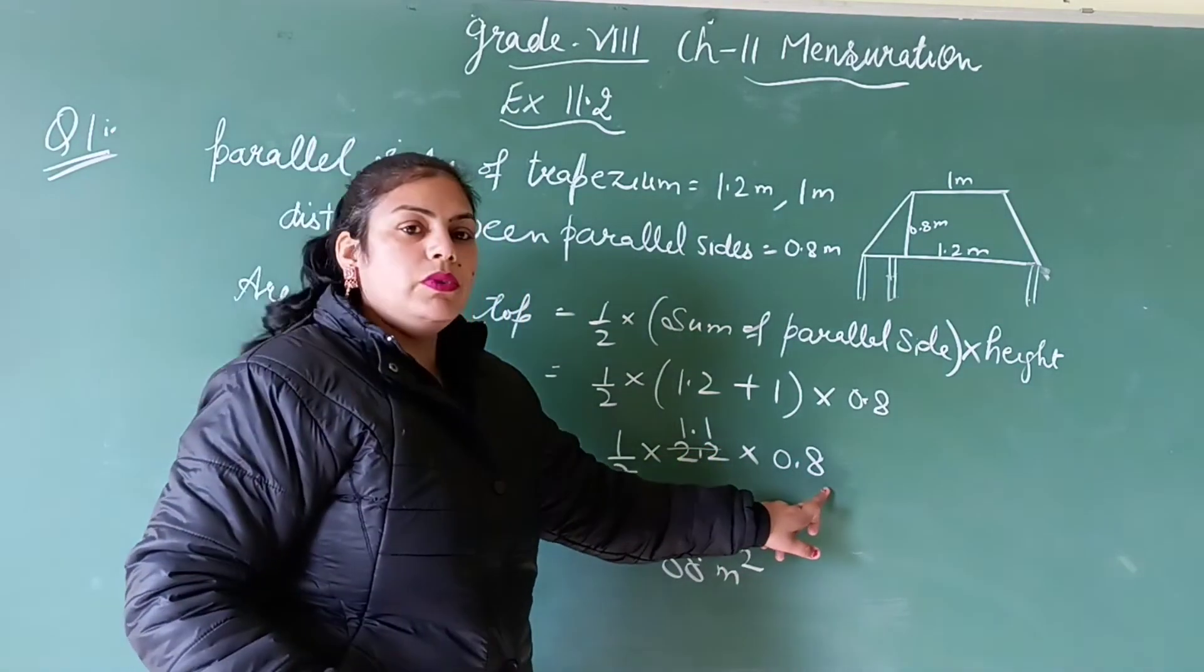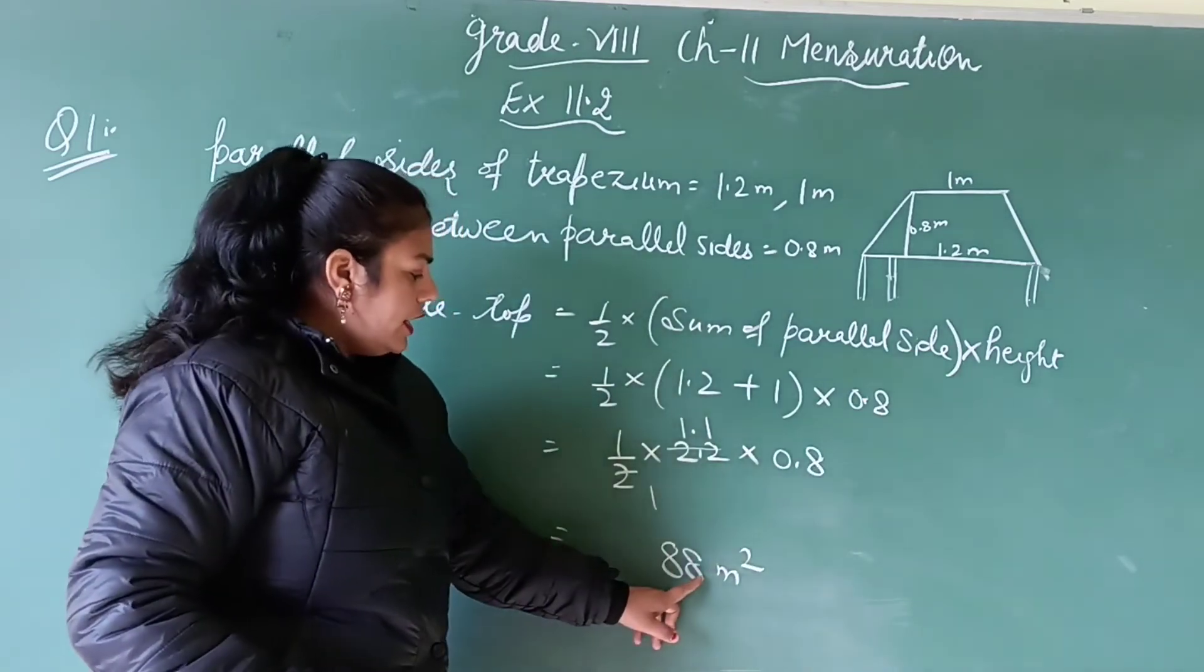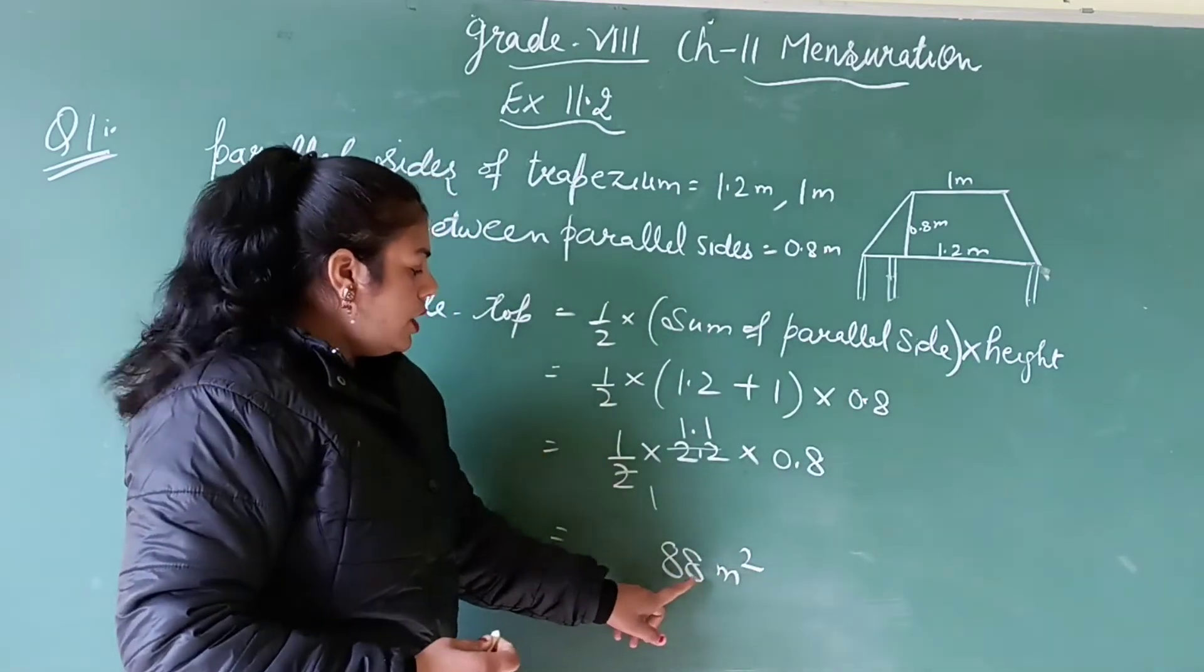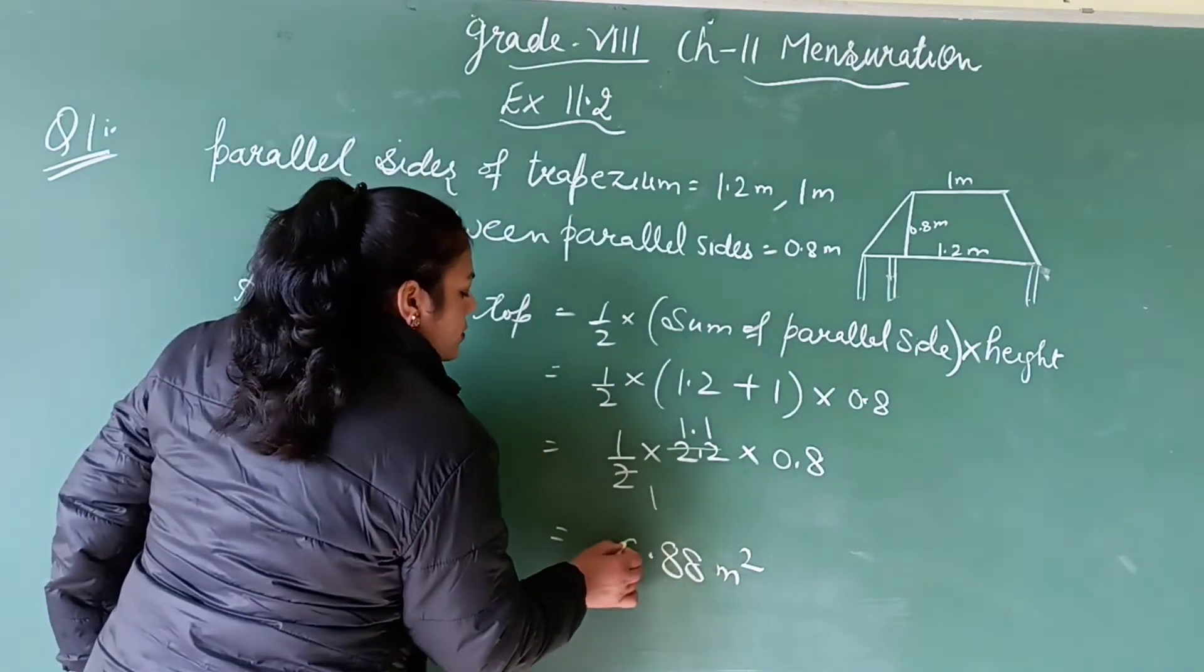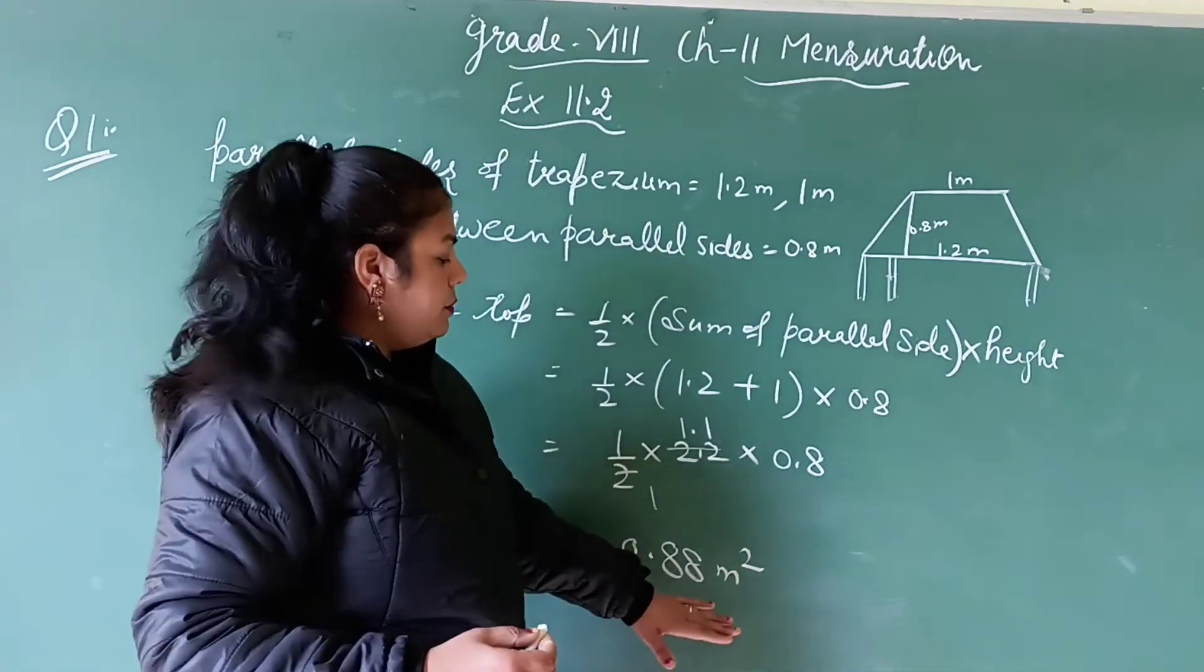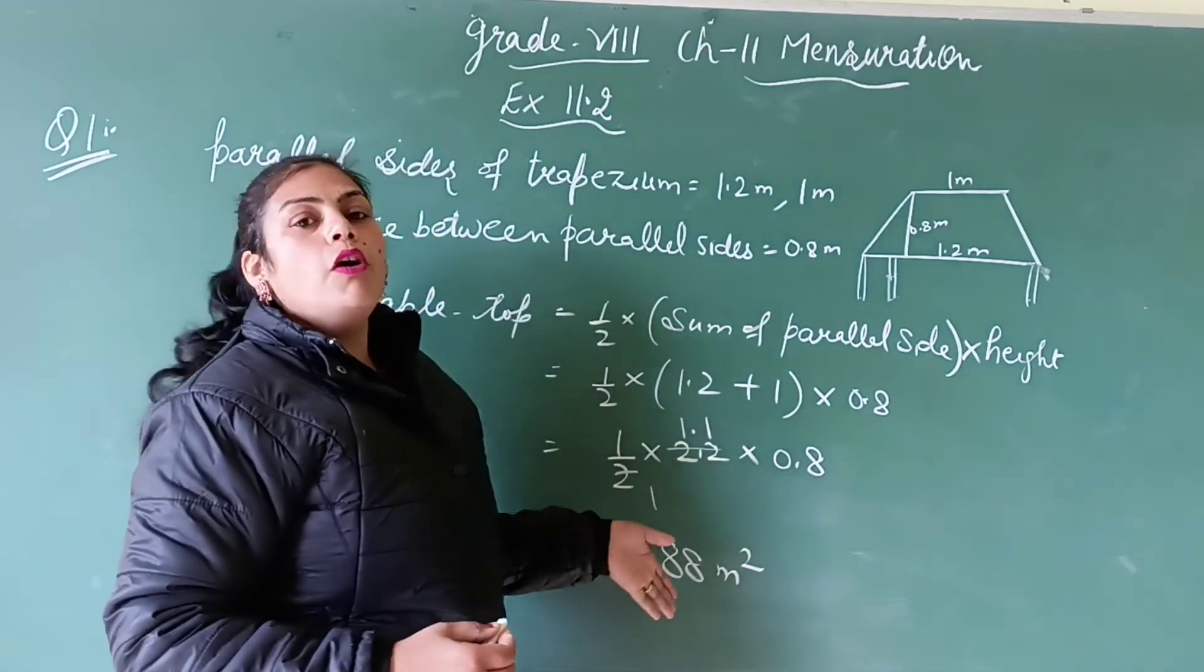Decimal should have 1 digit here, decimal should have 1 digit there. So leave 2 digits from the right, that places decimal. 0.88 meter square. This is the area of trapezium.